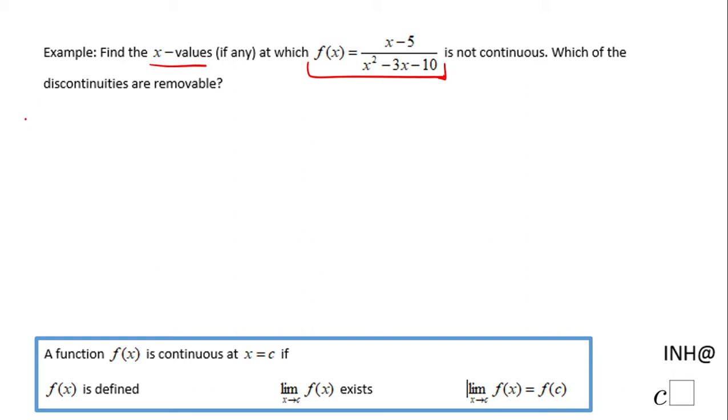So whenever you have a rational function like this one, you want to make the denominator equal to zero and see when that happens, because those are the points where the function is not continuous.